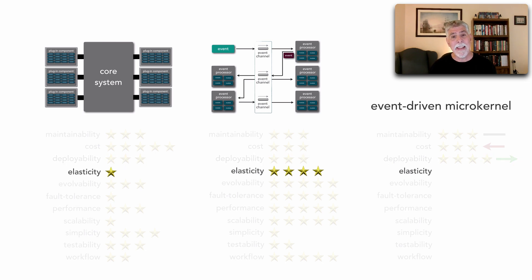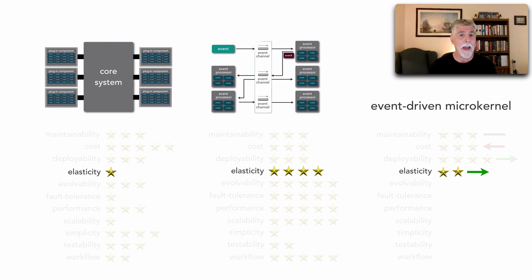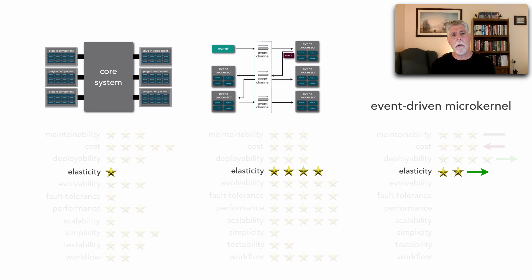From an elasticity standpoint, we actually gain one star. You might think — if we do the straight math, shouldn't it be more like three? The problem with elasticity is that we do gain a little bit because the queue provides some back pressure and asynchronicity. However, all requests still have to go through the core system, so it remains the limiting factor for elasticity. We gain one star primarily because we can do more async processing, so we're not in that core system as long.